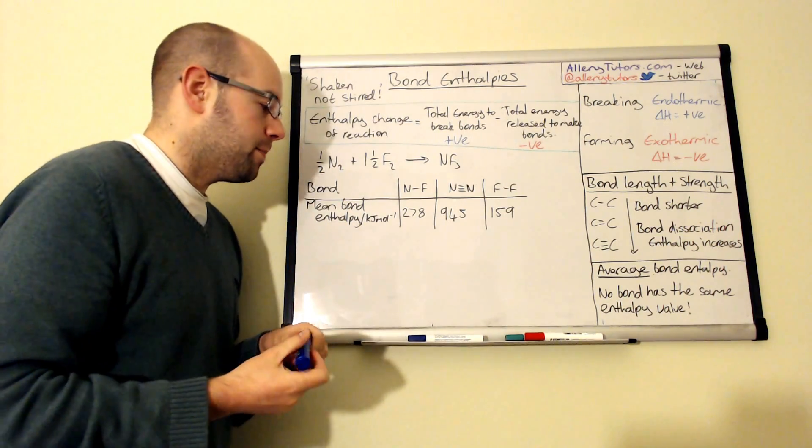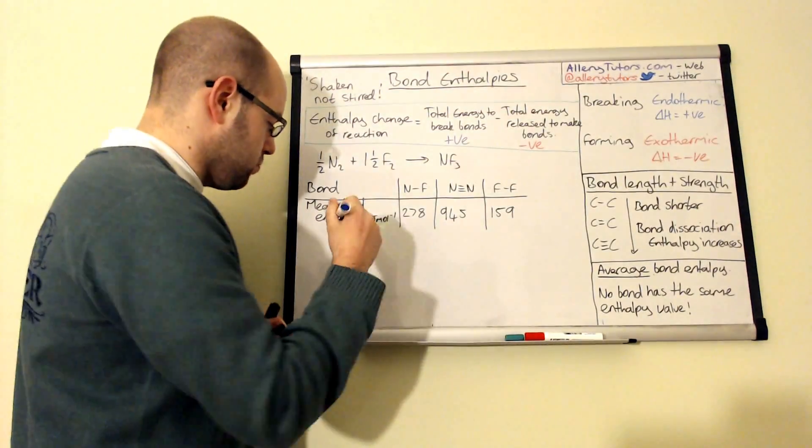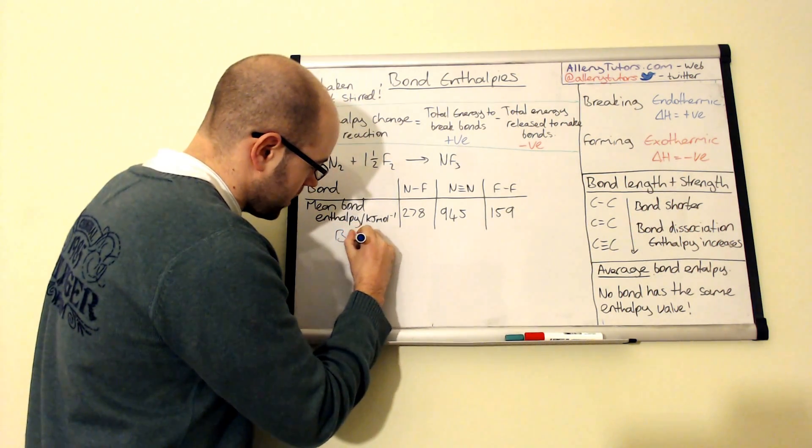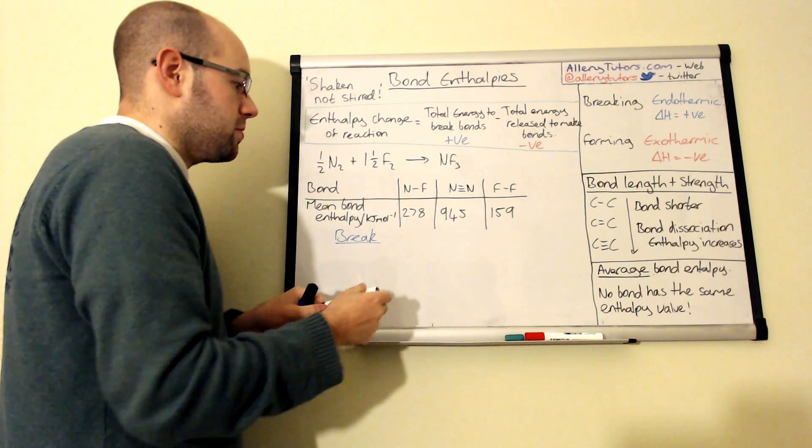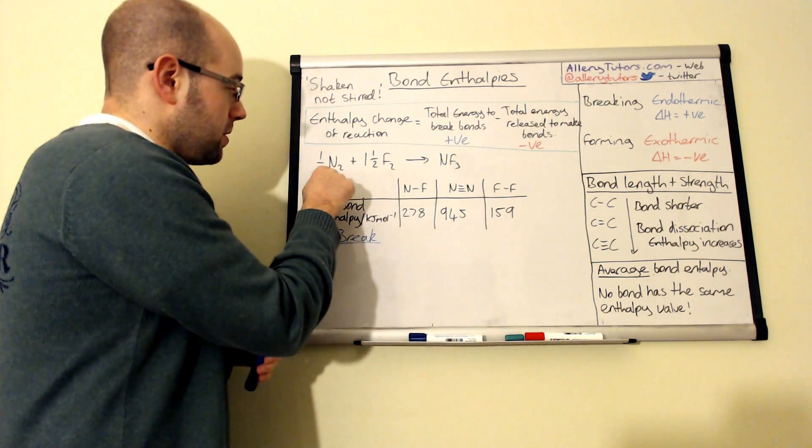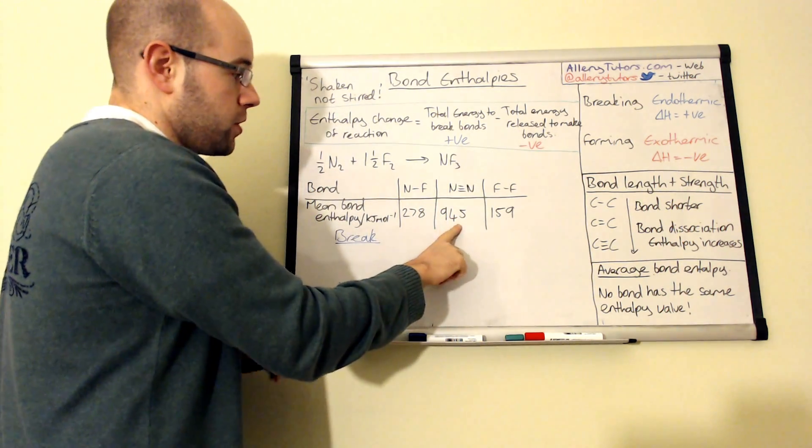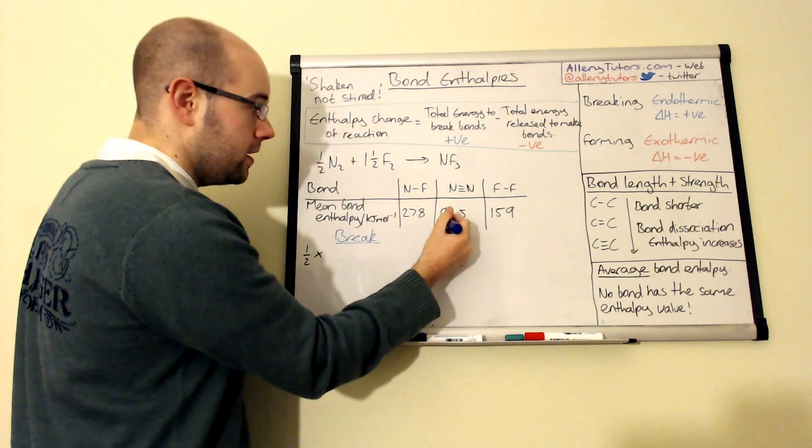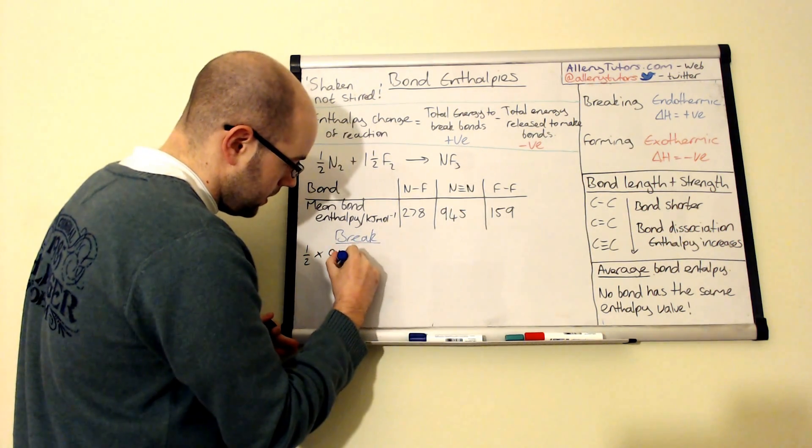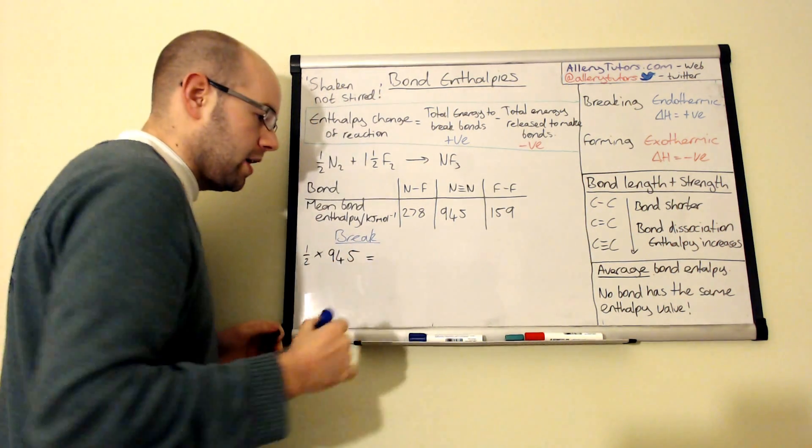So we're going to do the breaking bit first. So I'm going to do this in blue, so this is breaking first. So remember, breaking is endothermic, so we add our total amount. So you can see that we have half an N2, so N2 is N triple bond N. Because we've only got half mole, then what we do is we do half times by 945.